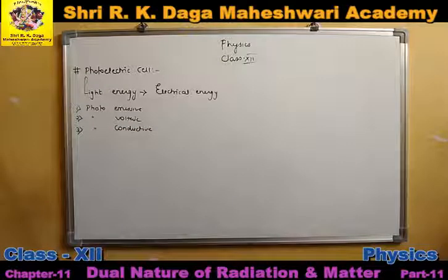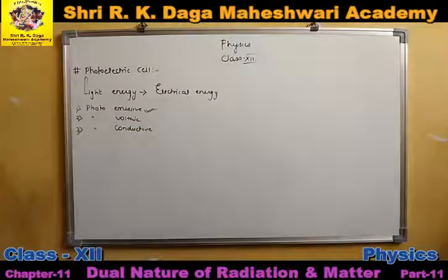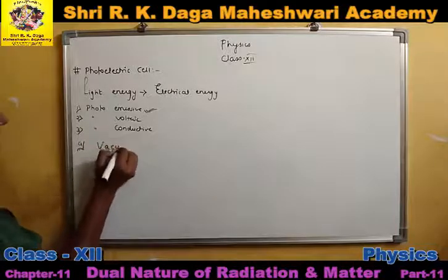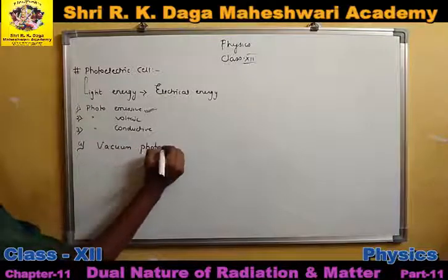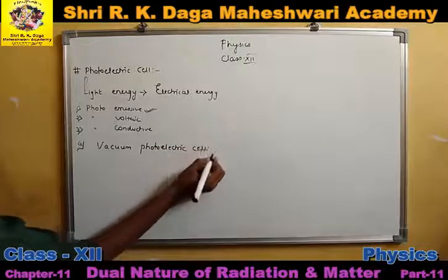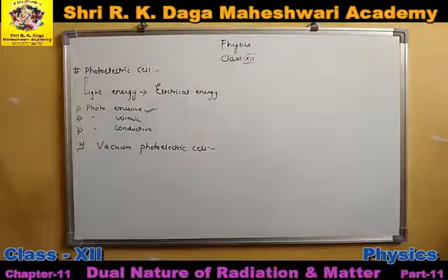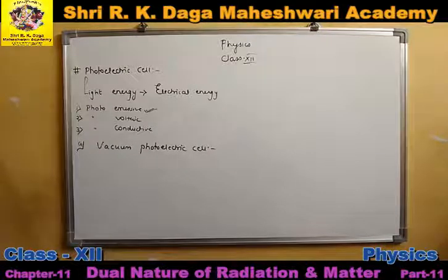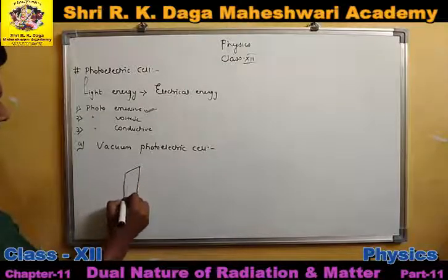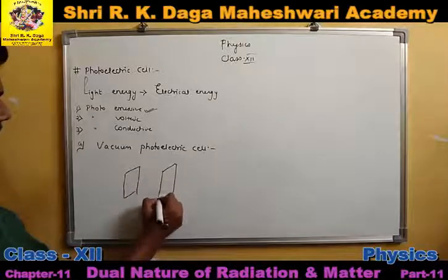We have to study photoemissive cells, as they are in your syllabus. So we will understand what photoemissive cells are and their types. Basically photoemissive cells are of two types. The first one is vacuum photoelectric cells, and the second one — we will come to that. In a cell, there will be two plates — obviously when making cells we need two plates. One is cathode C and the other is anode A.